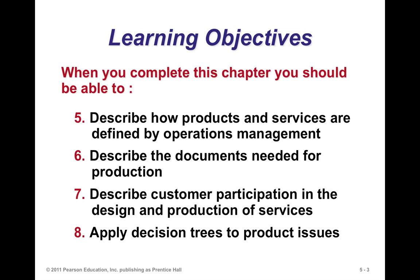When you complete this chapter, you should know how to describe how products and services are defined by operations management, talk about some of the documents needed for production, describe customer participation in the design and production of services, and potentially get into the application of decision trees for product design issues.